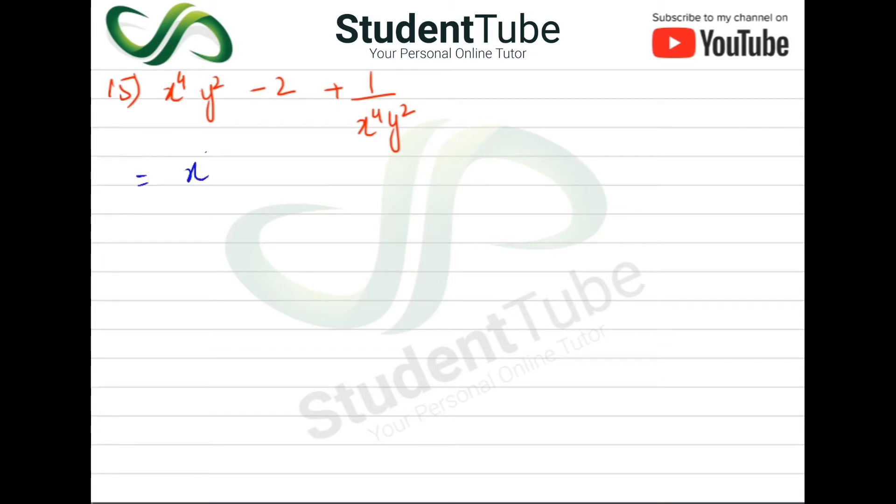First of all we will get it from this way: x⁴y² minus 2 plus 1 over x⁴y². Now we have to expand it here, so what do we do to expand it?